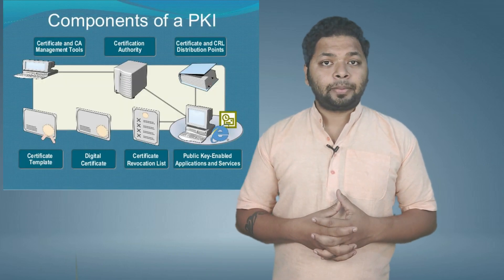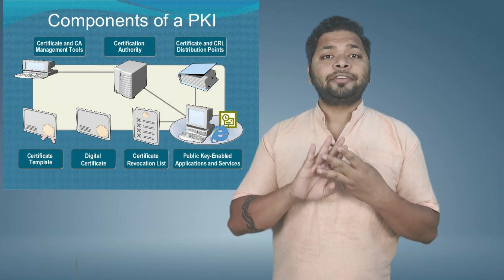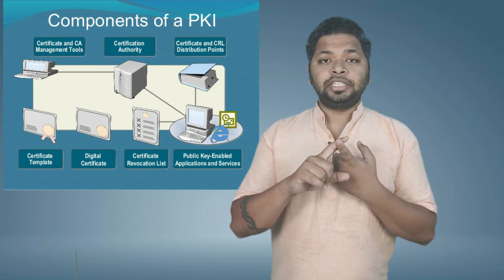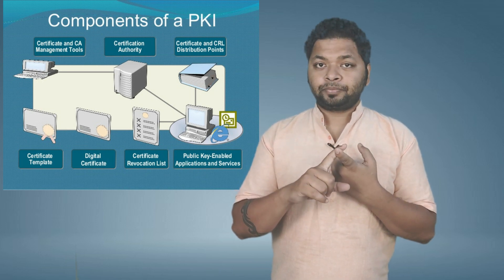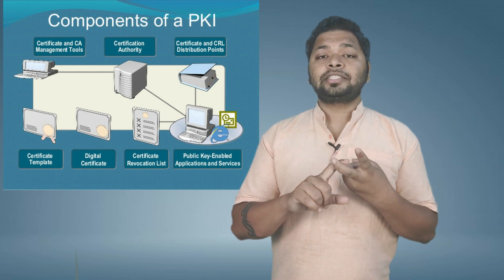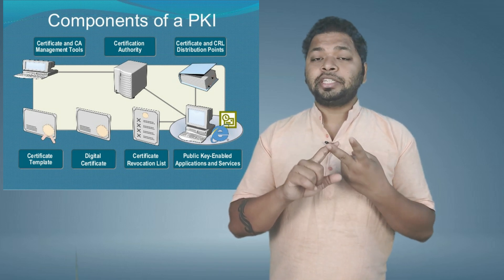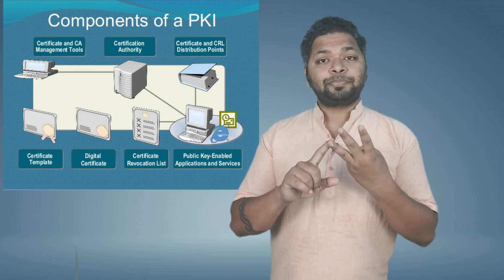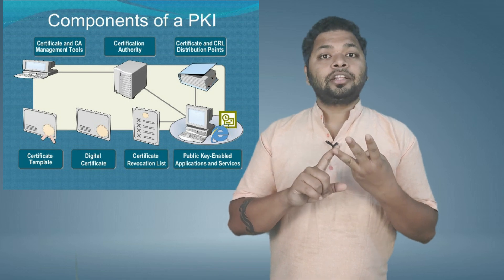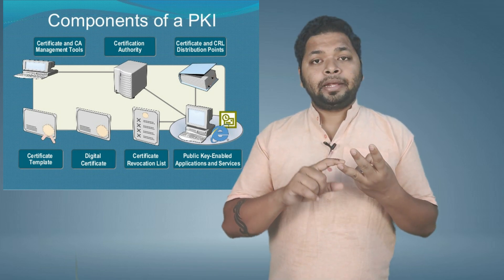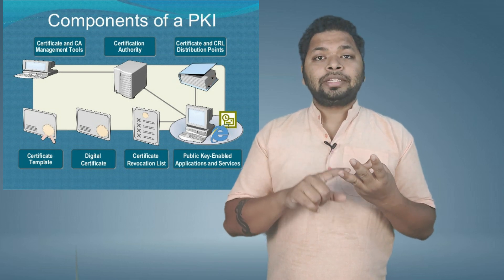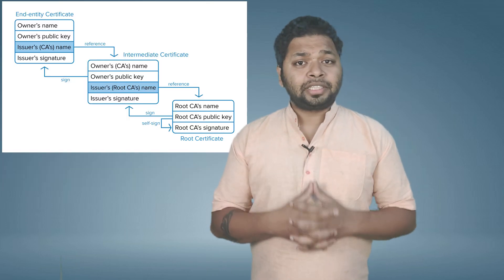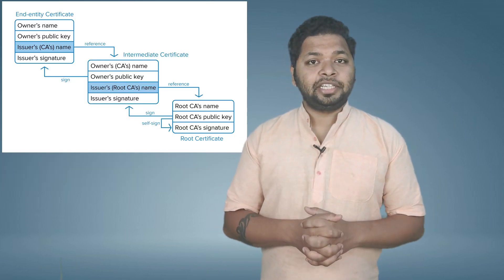There are three aspects on which a client or web browser verifies a certificate. First is verifying integrity — done using the root CA or CA certificate. Second is timing — checking whether the certificate has expired using the system's own clock. Third is CRL or OCSP validation — determining whether the certificate received from the server is still valid and has not been revoked.